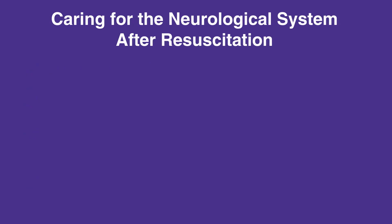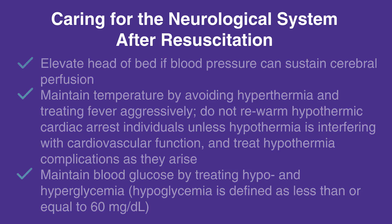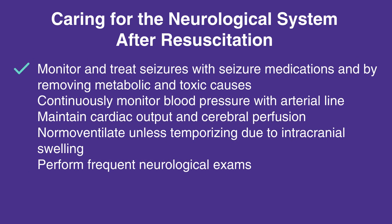When caring for the neurological system after resuscitation, follow this checklist. Elevate head of bed if blood pressure can sustain cerebral perfusion. Maintain temperature by avoiding hyperthermia and treating fever aggressively. Do not re-warm hypothermic cardiac arrest individuals unless hypothermia is interfering with cardiovascular function, and treat hypothermia complications as they arise. Maintain blood glucose by treating hypo and hyperglycemia. Hypoglycemia is defined as less than or equal to 60 mg per deciliter. Monitor and treat seizures with seizure medications and by removing metabolic and toxic causes.